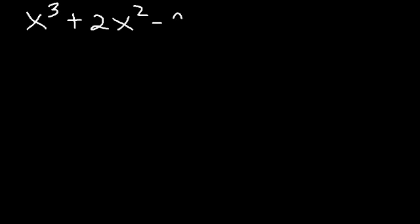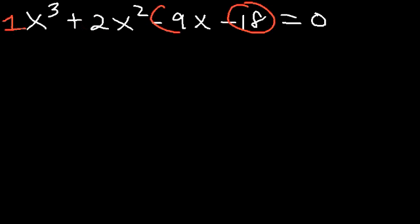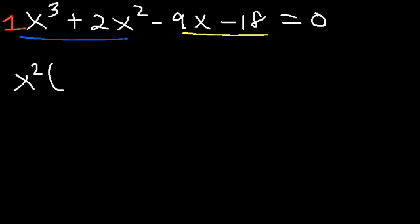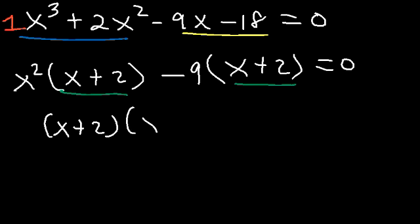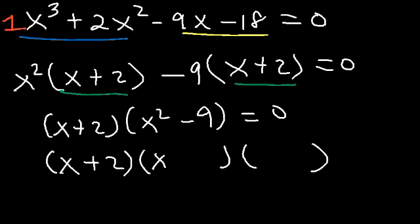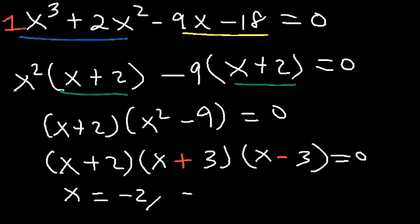Try this one: x cubed plus 2x squared minus 9x minus 18. Can we factor by grouping? 2 divided by 1 is 2, and negative 18 divided by negative 9 is 2 — same ratio, so yes. Take out x squared from the first two terms: x and 2. Then take out negative 9 from the last two: negative 9x divided by negative 9 is x, and negative 18 divided by negative 9 is plus 2. Factor out the common factor x plus 2, leaving x squared minus 9. Using difference of perfect squares, x squared minus 9 factors as x plus 3 times x minus 3. Therefore, x is equal to negative 2, negative 3, and positive 3.